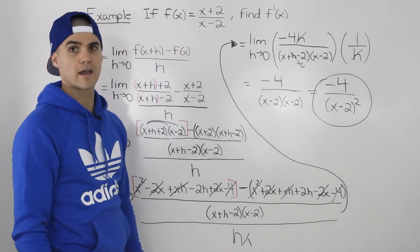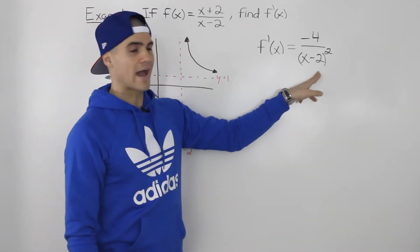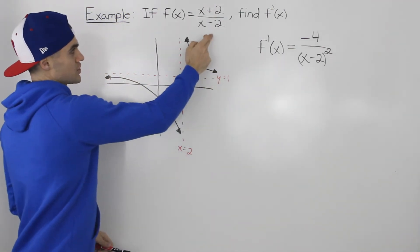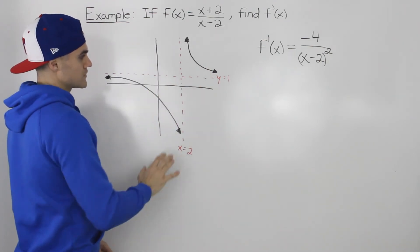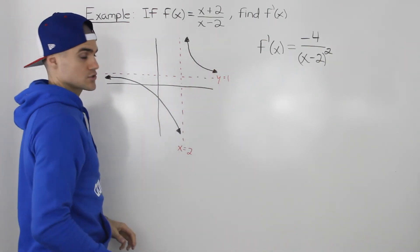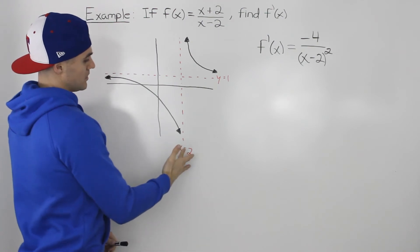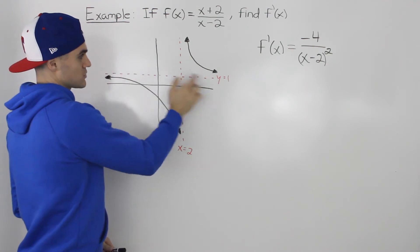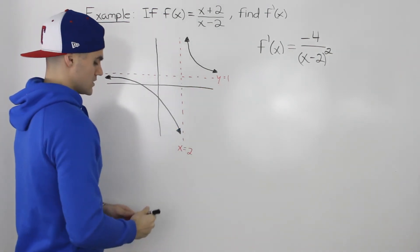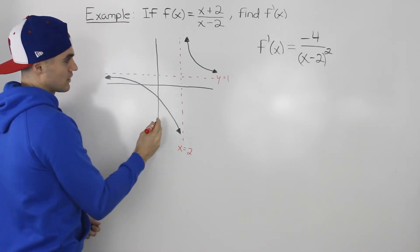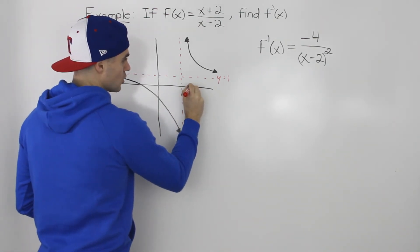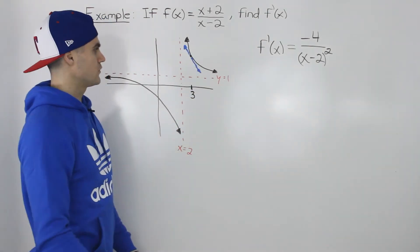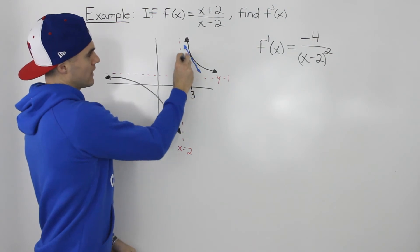To better explain what we can do with this derivative function, I graphed f(x) = (x+2)/(x-2). Hopefully you remember how to graph rational functions from advanced functions. There's a vertical asymptote at x=2 and a horizontal asymptote at y=1. Let's say we want to find the slope of the tangent at x=3. If we draw a tangent at that x value, it's the blue line shown.